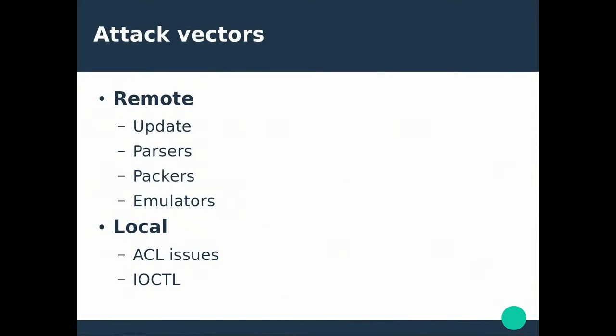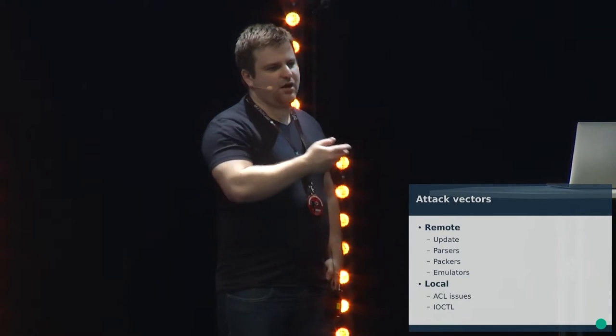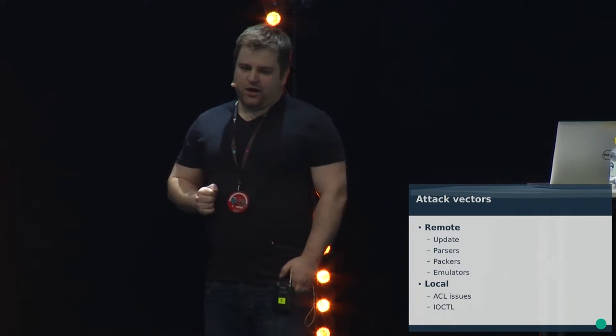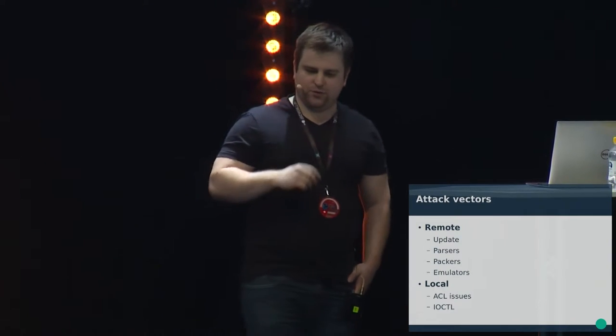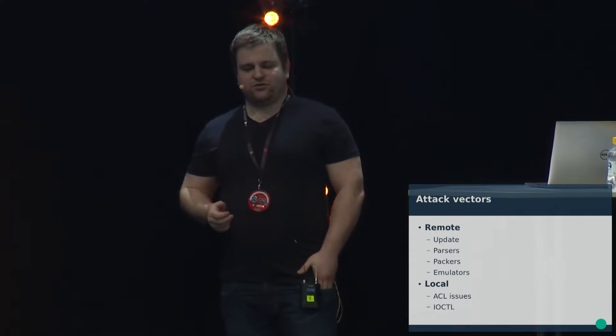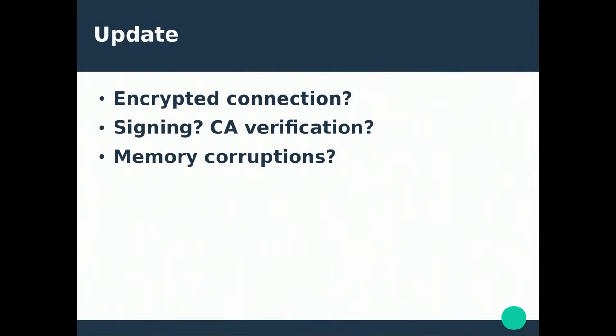When attacking some systems, the attack vectors are the way to begin. You have to know through what or what to attack exactly. In the case of antiviruses, there are multiple possibilities. You can have remote vectors — meaning you don't yet have any access to the machine you are attacking. Local vectors are for situations where you already have some code running on the computer but want to escalate privileges. Remote vectors include sending files or doing other things with updating, parsers, unpackers, and emulators. Local vectors include access control list issues and IOCTL — how the antivirus communicates with kernel drivers.